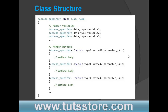Now I will show you a class structure. First, the access specifier — I will discuss this later. Then the class keyword, followed by the class name. Inside, you define member variables using an access specifier, then the data type, followed by the variable name. You can also add methods: access specifier, then return type, then method name, and if you have any parameters — one or more — you put the parameter list. Then there is the method body. So this is basically a class structure.